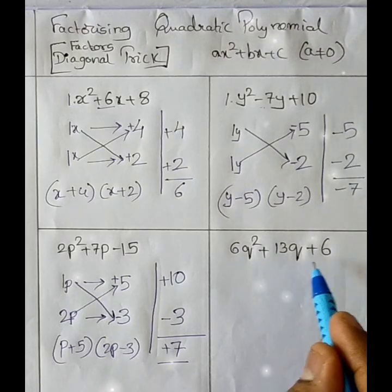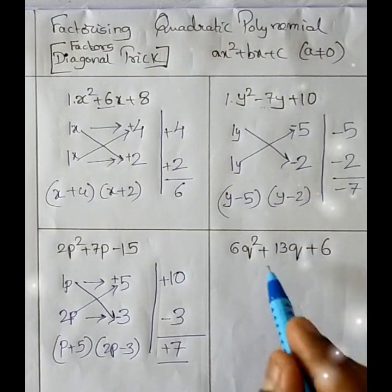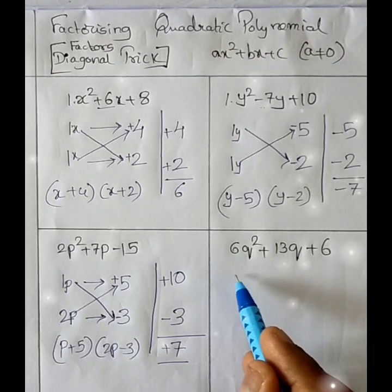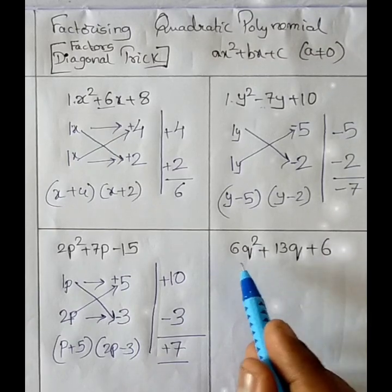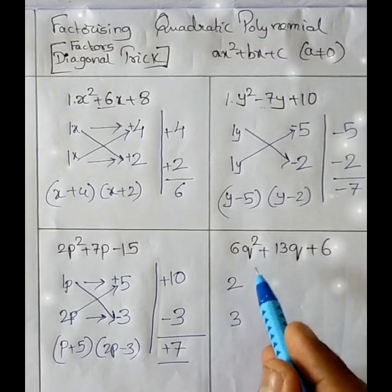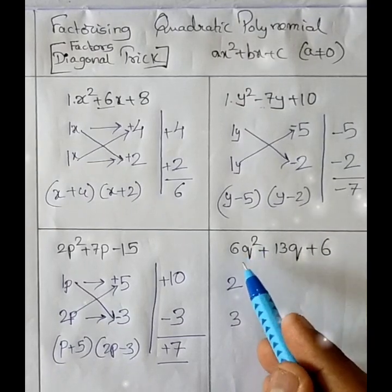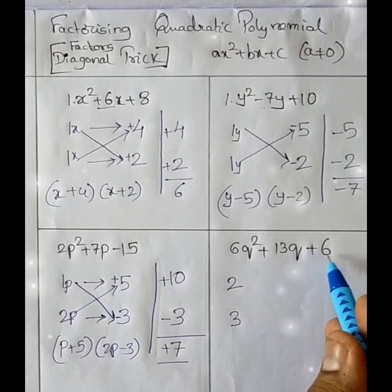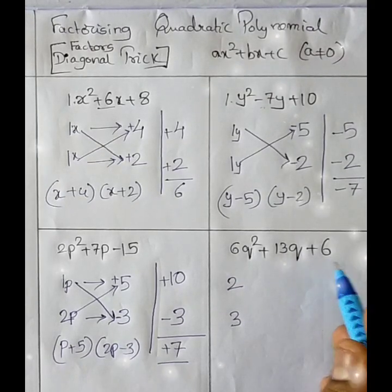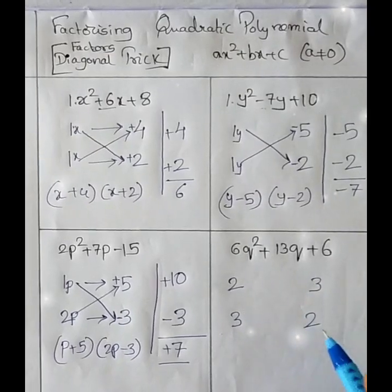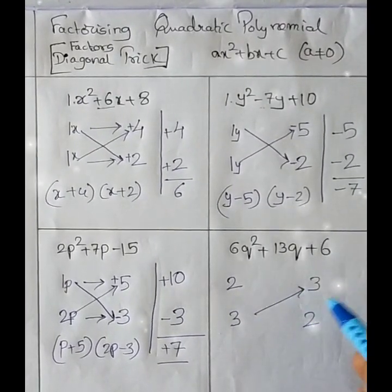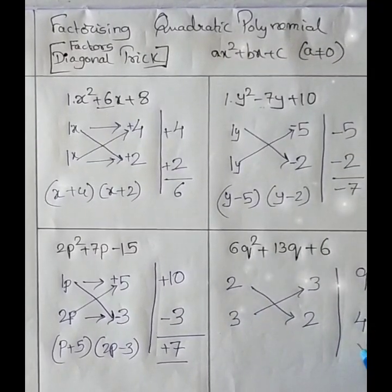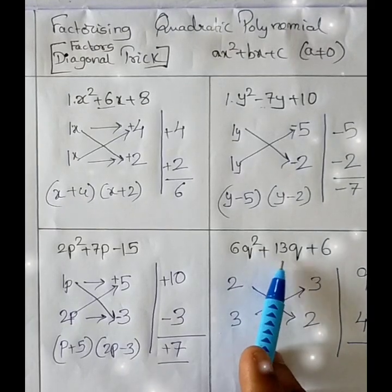Let us go for one more example: 6q² + 13q + 6, a quadratic polynomial in q. For q², the coefficient is 6, and factors of 6 are 2×3 — always take square coefficients small to big. The constant is also 6, so factors are 3×2 — big to small. Diagonal multiplication: 3×3 = 9 and 2×2 = 4.